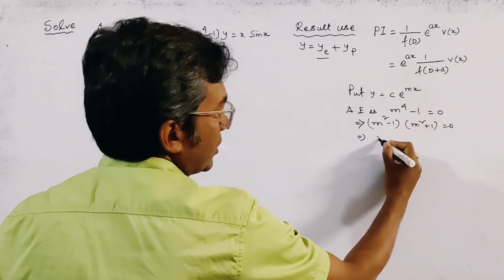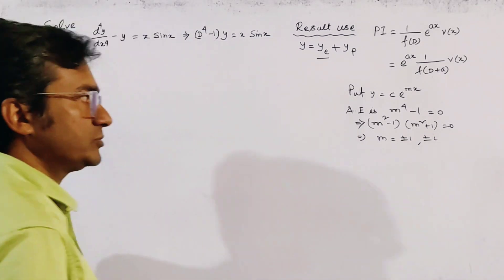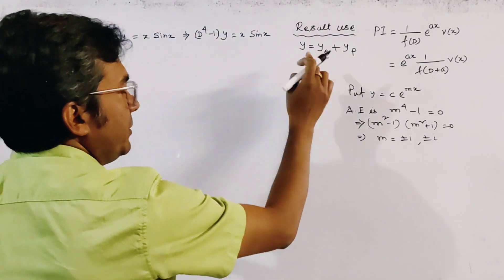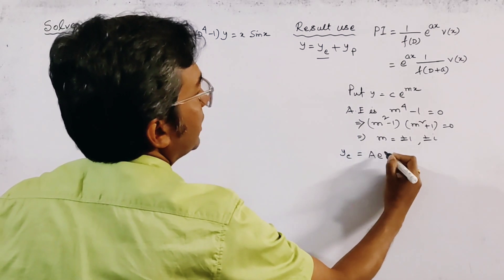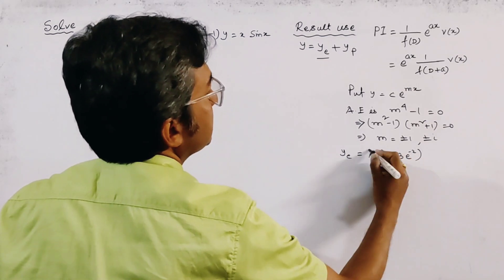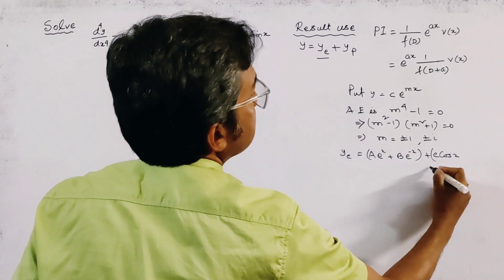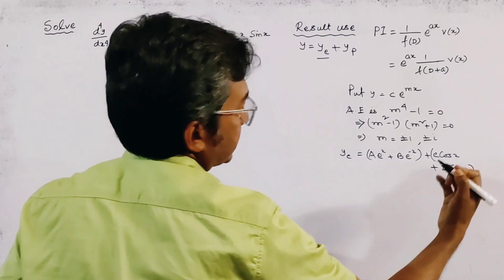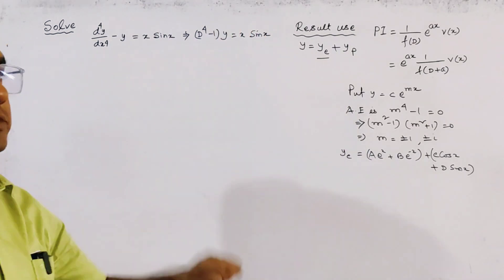So the four values of m are plus or minus 1 and plus or minus i. From these roots, we get the complementary function yc, which is given by a·e^x plus b·e^(−x) plus c·cos(x) plus d·sin(x).